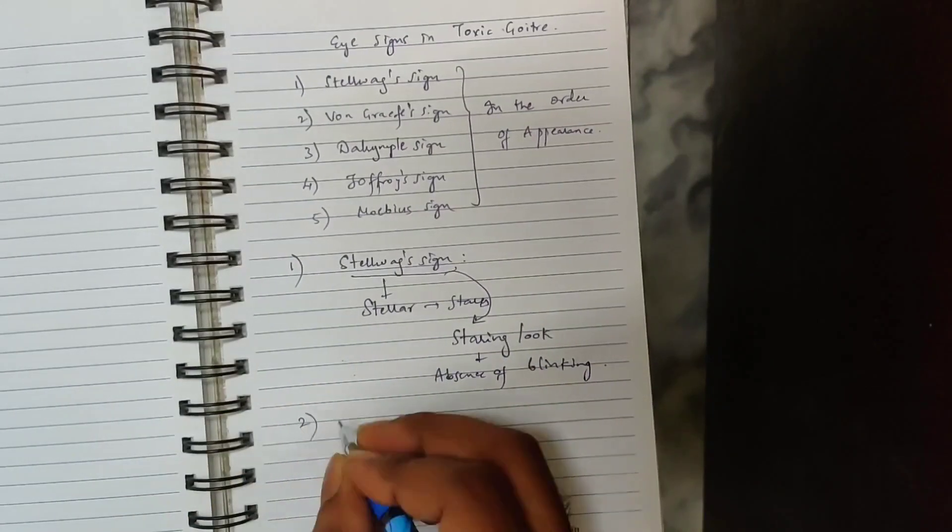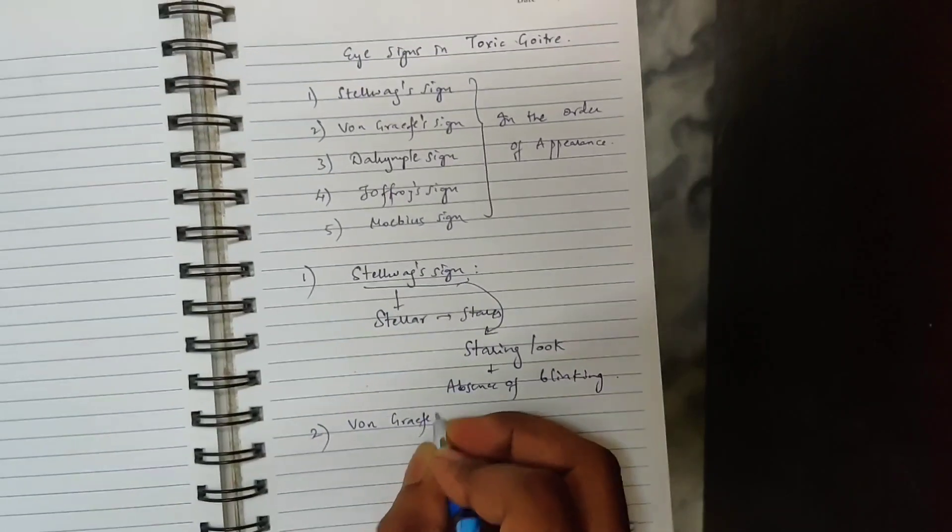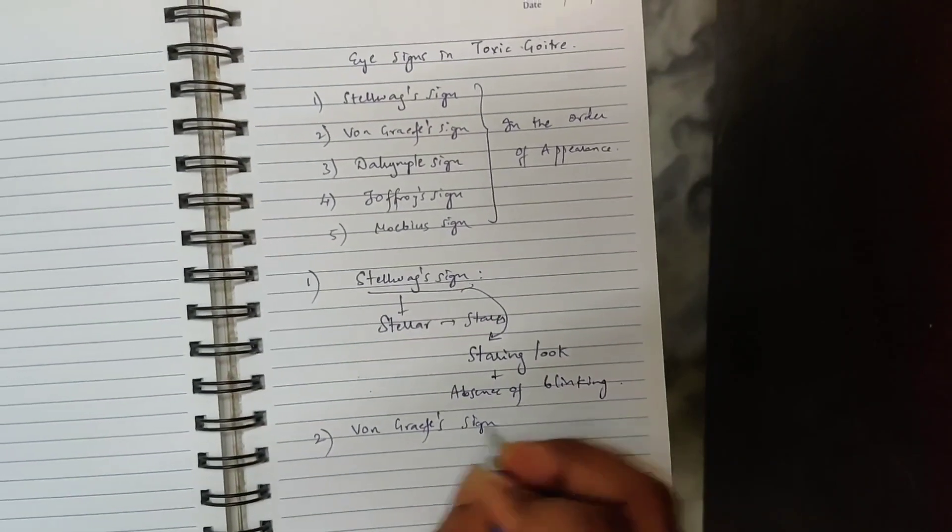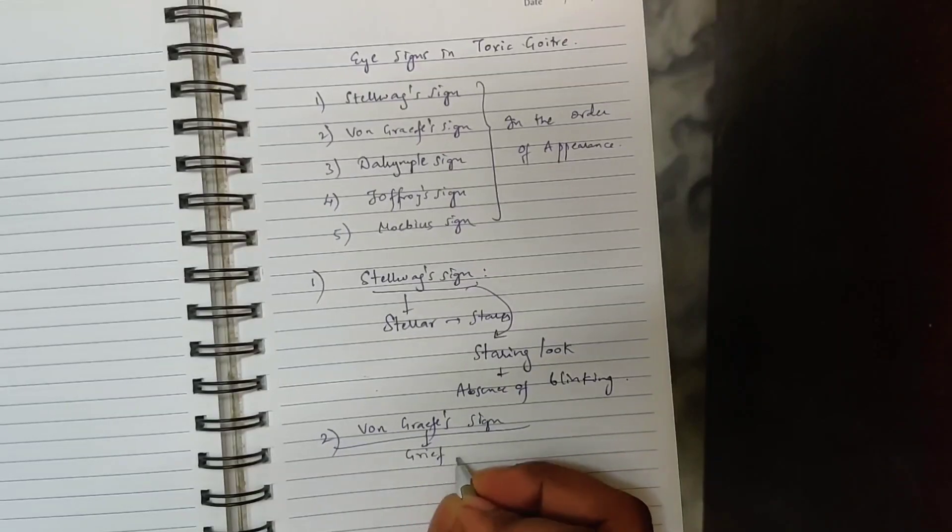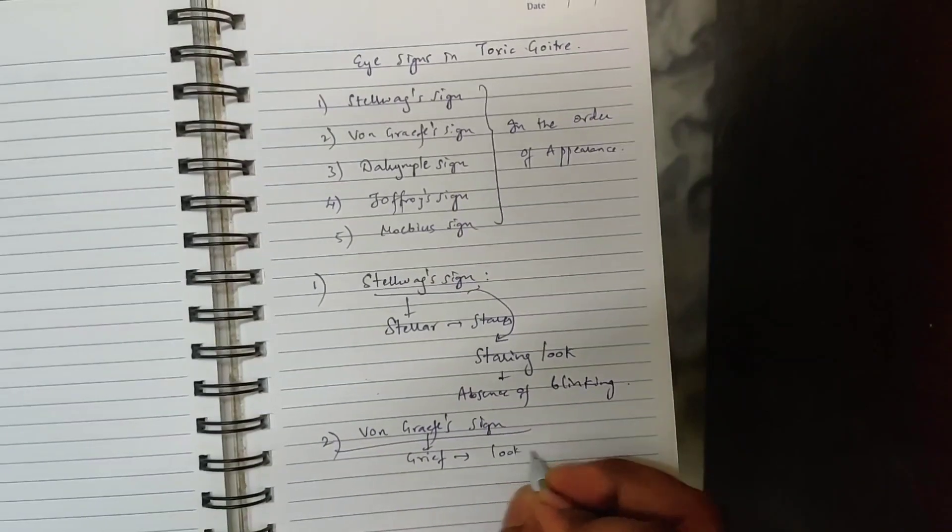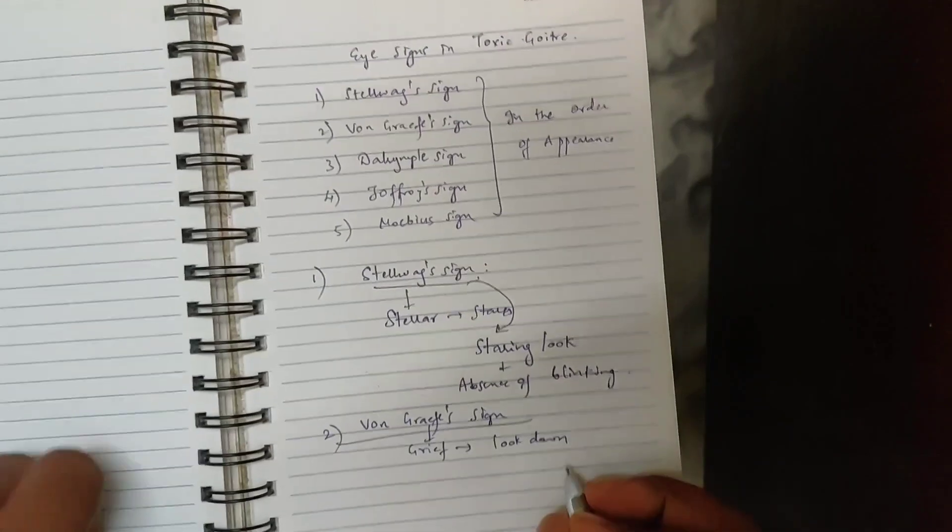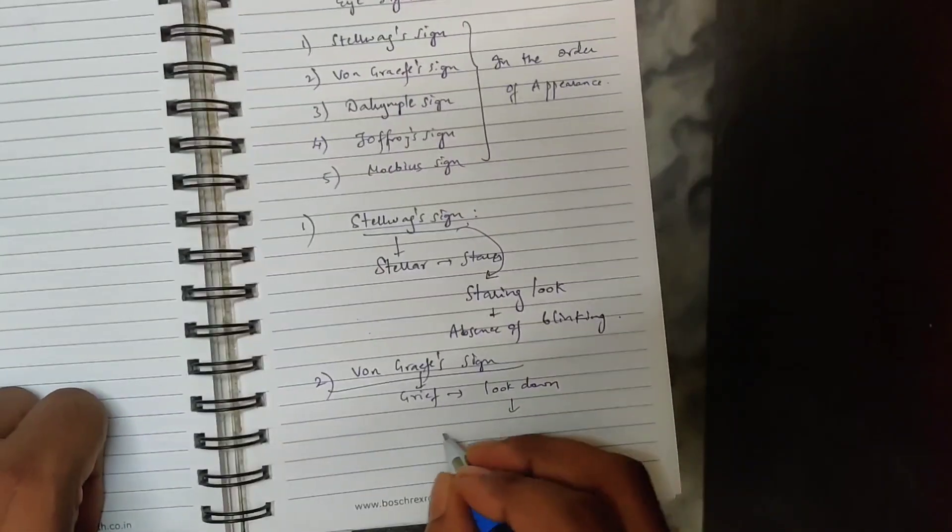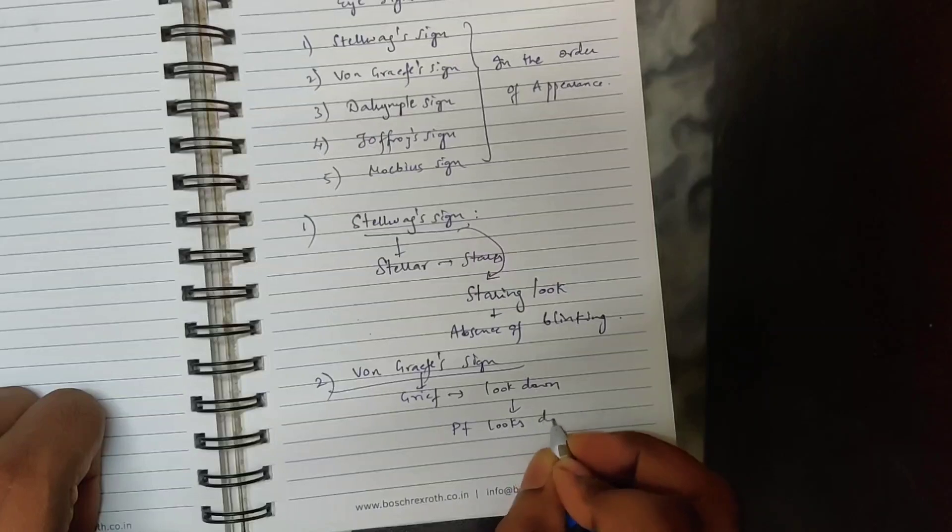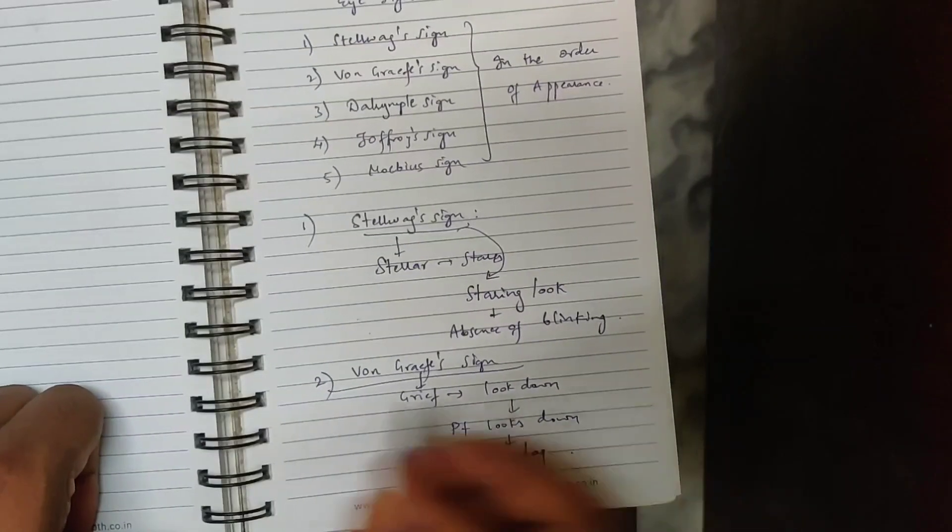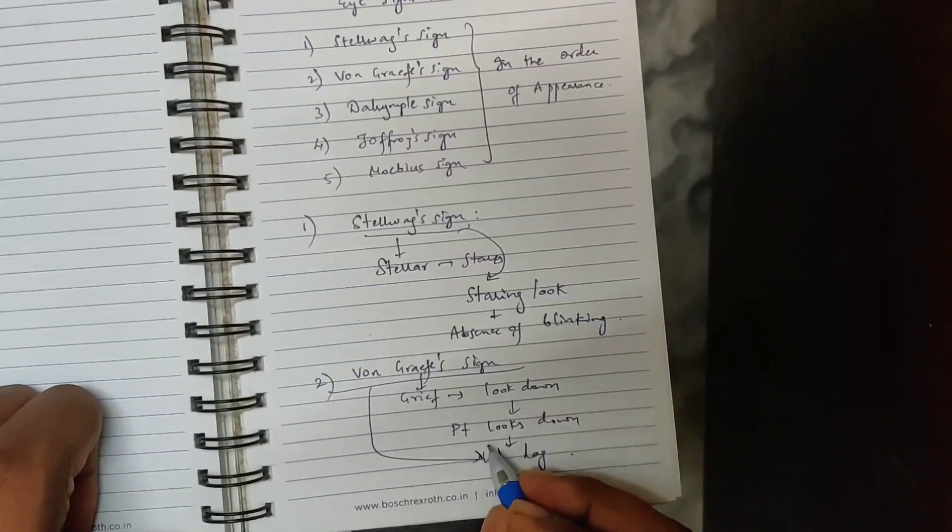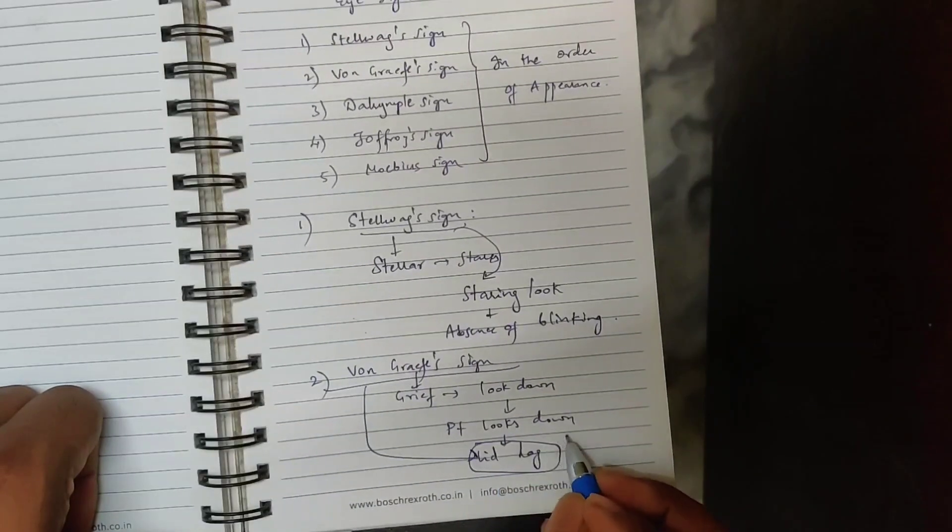Next one is Von Graf sign. Graf sounds like grief. When people are in grief, they usually look down. So the patient looks down, but there is lid lag. Von Graf sign is lid lag when the patient looks down.